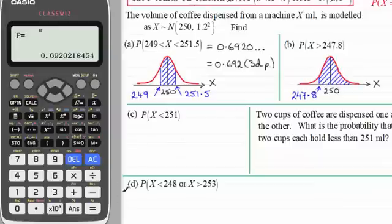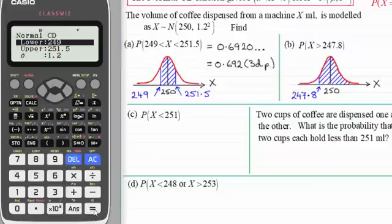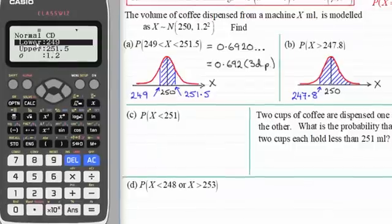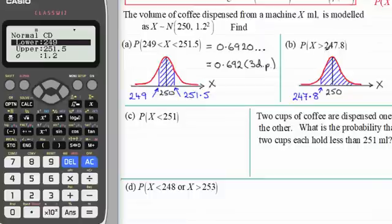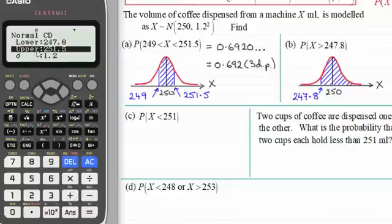So by pressing equals on here, I go back to the statistics menu for the normal CD function. It's remembered what we typed in earlier. If you were just coming across this for the first time, you'd probably have different values in here. So the lower bound then is now 247.8. So just put 247.8 in.